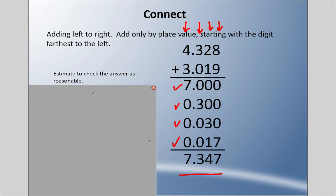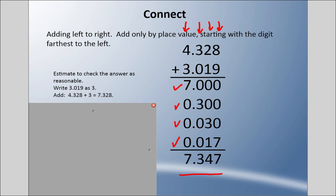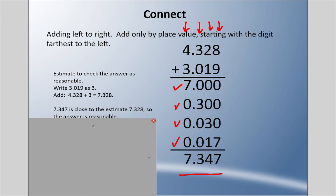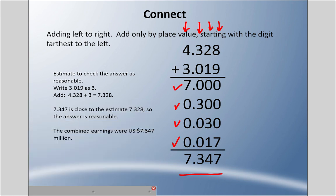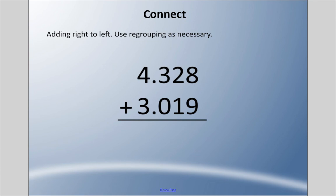It's probably a good idea to estimate like we did in the last video to check if the answer is reasonable. We could write three and nineteen thousandths as approximately three, and four and three hundred twenty-eight thousandths rounds to about four, giving us approximately seven. Our answer of seven and three hundred forty-seven thousandths is very close, so this is a reasonable answer.